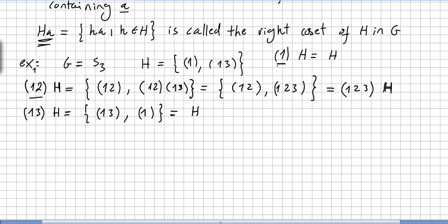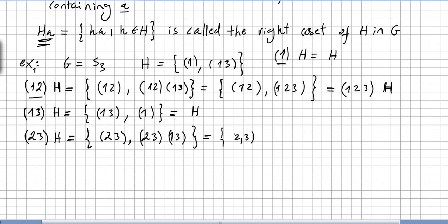Now the left coset of (2 3) times H: (2 3) times the identity gives (2 3), and (2 3) times (1 3) gives (1 3 2). So that is the coset (1 3 2)H. These are the left cosets of H.